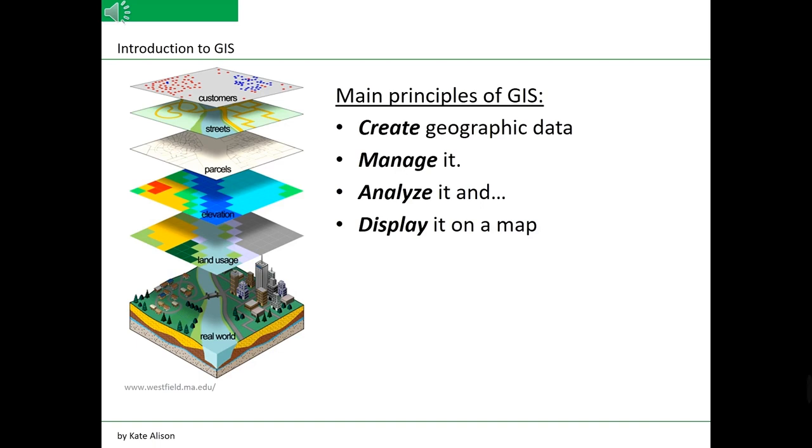Main principles of GIS. GIS can relate unrelated information by using location as a key index variable. Locations or extents in the Earth space time may be recorded as dates, times of occurrence and x, y and z coordinates representing longitude, latitude and elevation respectively.